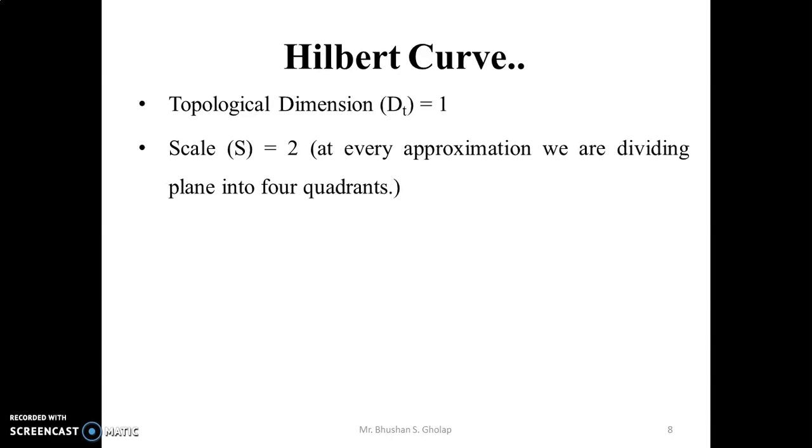But the length N of the curve changes by 4. At each subdivision, we need 4 scaled curves to form a provisional curve. That is why length N equals 4. For all of this, we know the formula that